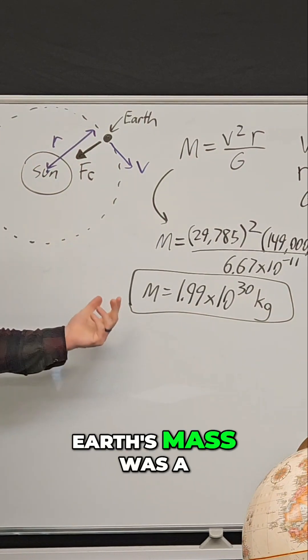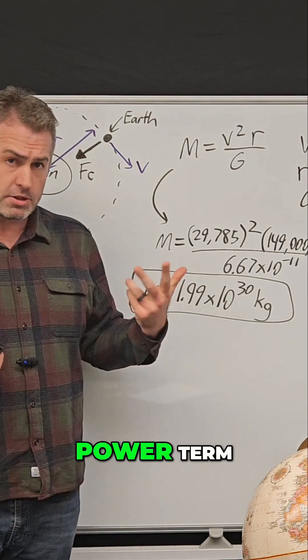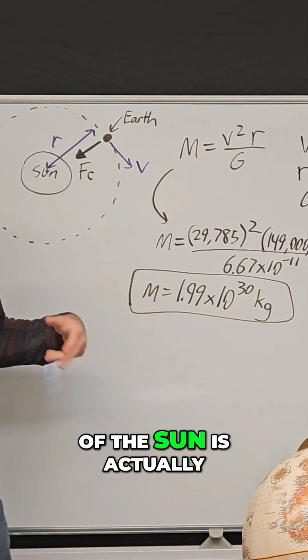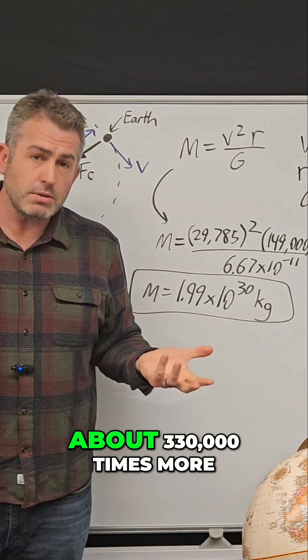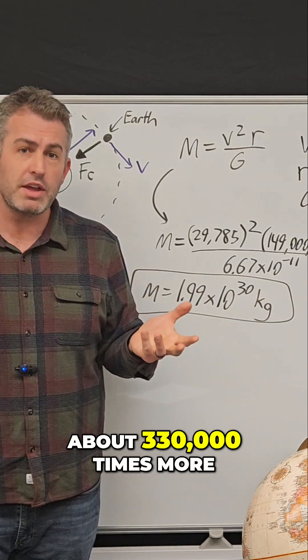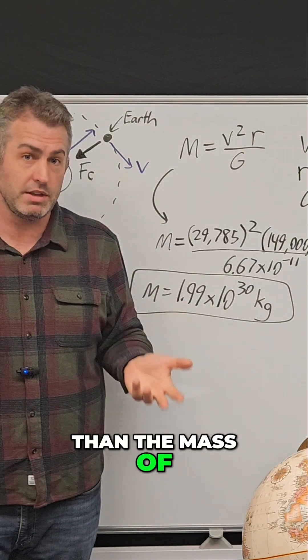So remember, earth's mass was a 10 to the 24th power term. And so the mass of the sun is actually about 330,000 times more than the mass of the earth.